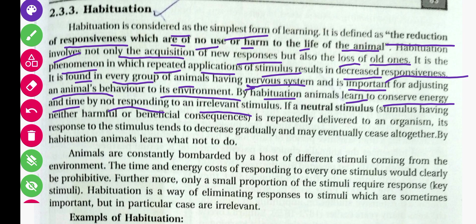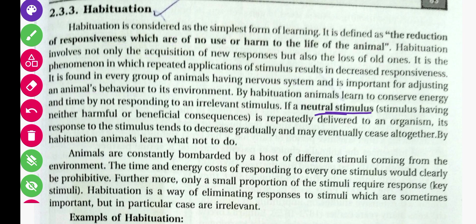If a neutral stimulus — having neither harmful nor beneficial effect — is repeatedly delivered to an organism, its response to that stimulus tends to decrease gradually and may eventually cease altogether. Neutral stimulus is very important in understanding habituation. By habituation, animals learn what not to do.